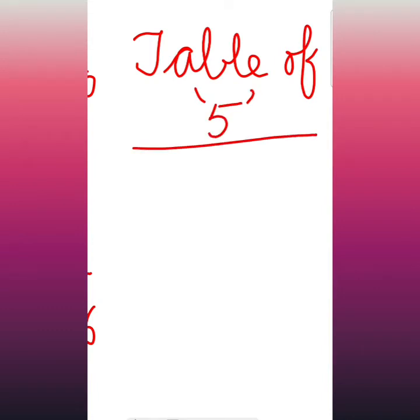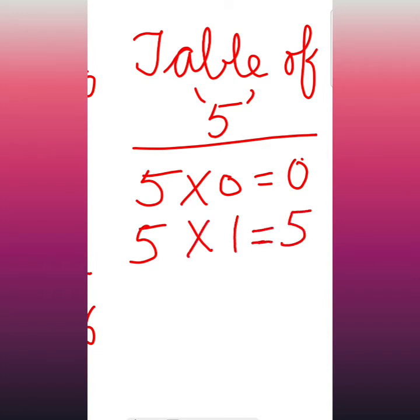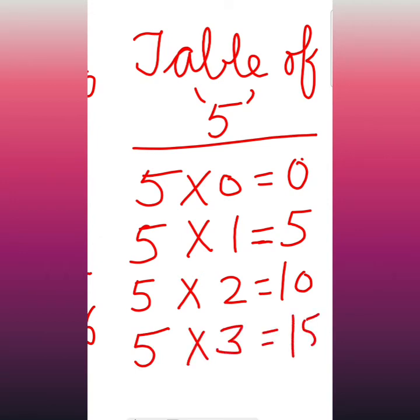Table of 5. Okay. 5 0's are... tell me, hurry up. 5 0's are 0. 5 1's are 5. Very nice. 5 2's are... tell me. 10. 5 3's are... 15. 5 4's are... tell me, hurry up. 20.